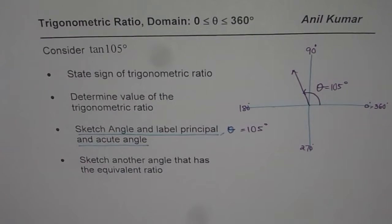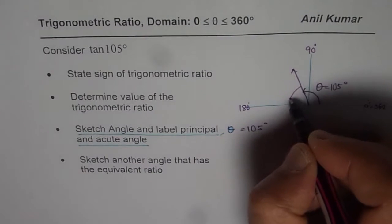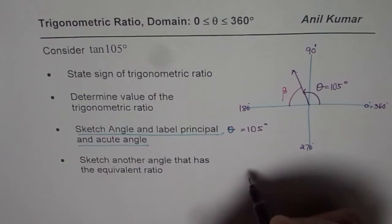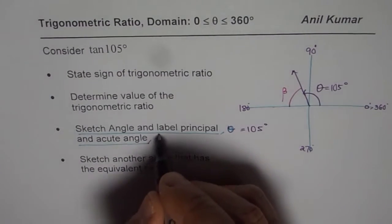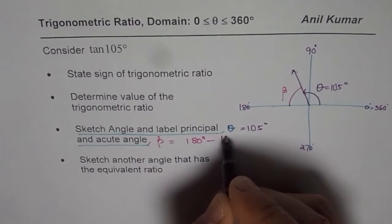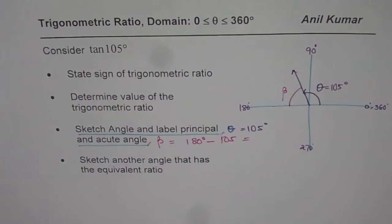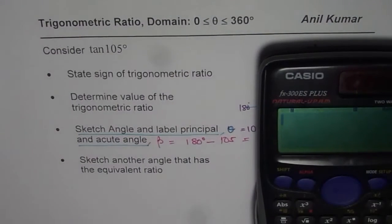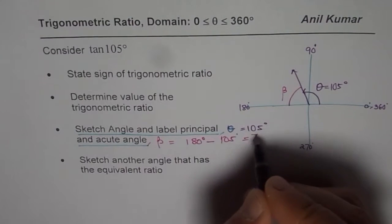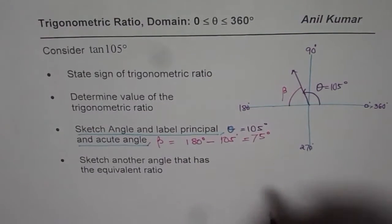Now whenever we say related acute angle, that is the angle which the terminal arm makes with the horizontal, let's call it beta. So related acute angle beta is equals to 180 degrees minus the principal angle 105. So let's take the calculator and calculate 180 minus 105 equals to 75. 75 degrees is our acute angle.